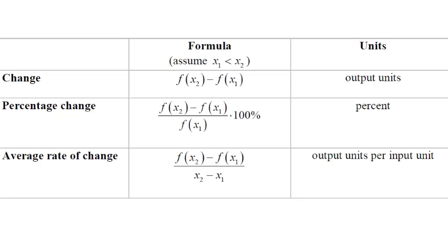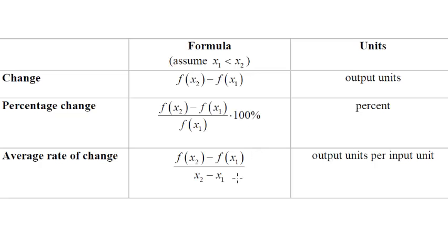To recap: change is the difference in outputs with output units. Percent change is the difference in outputs divided by the initial output, converted to a percent, with units of percent. Average rate of change is rise over run, with units of output per input.